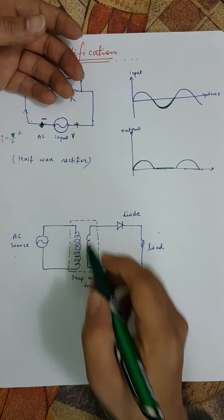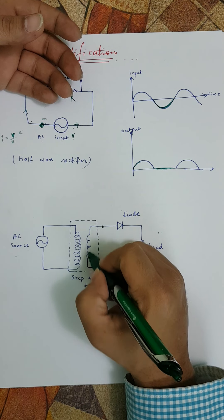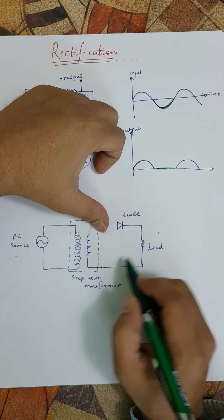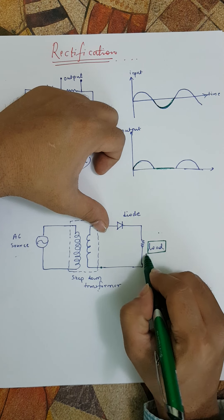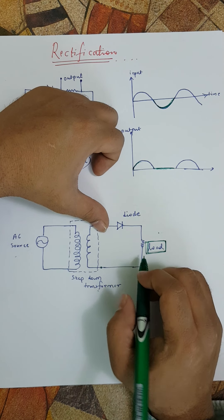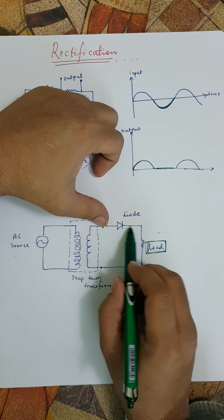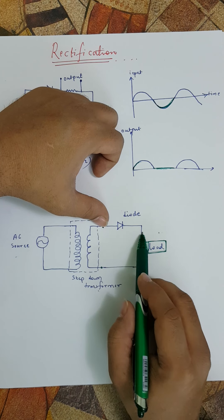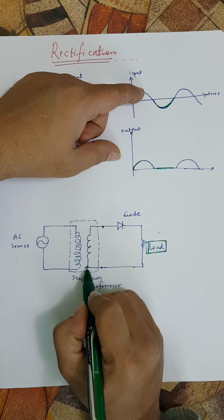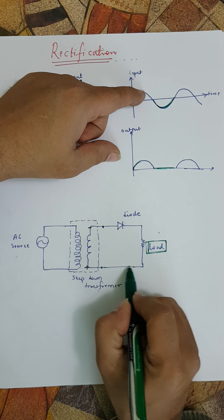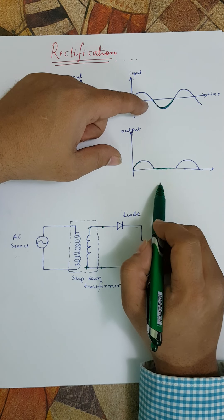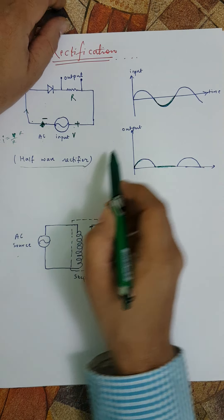After lots of stepping up, finally when we come to the consumer end, we step it down. The voltage across the secondary coil is the input voltage for this circuit, which has a load resistance — the resistance we want to utilize and dissipate power in. In the positive half cycle, the diode allows current to flow and we get a potential difference, whereas in the negative half cycle the diode blocks current.